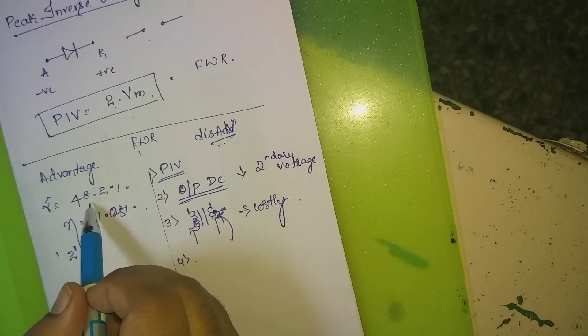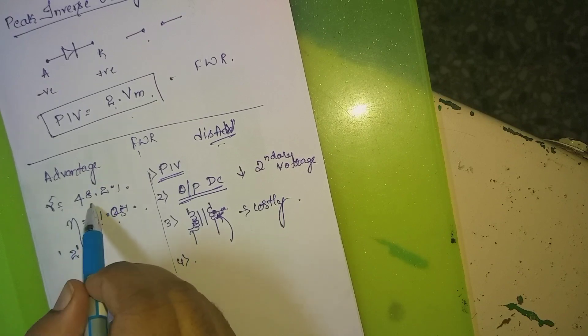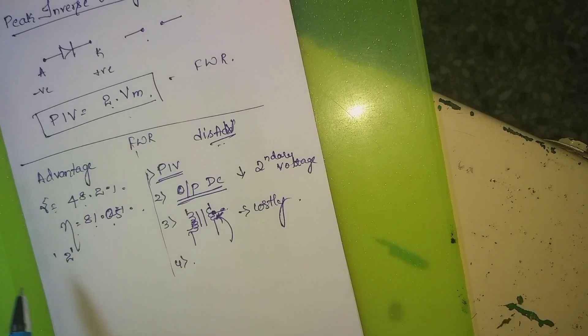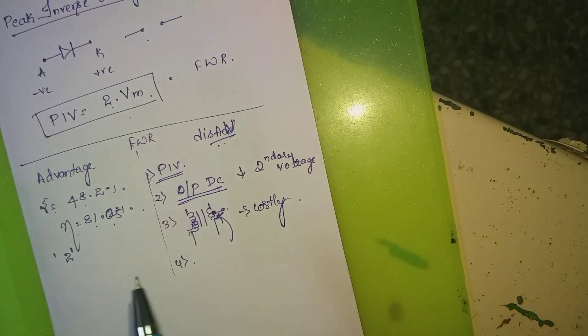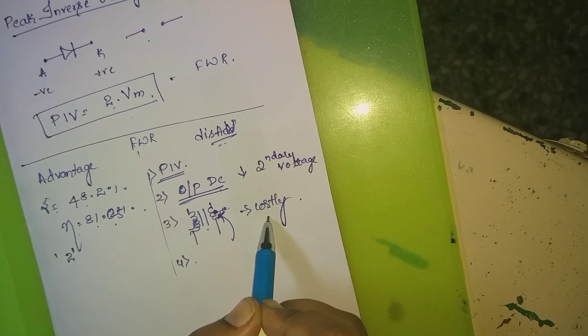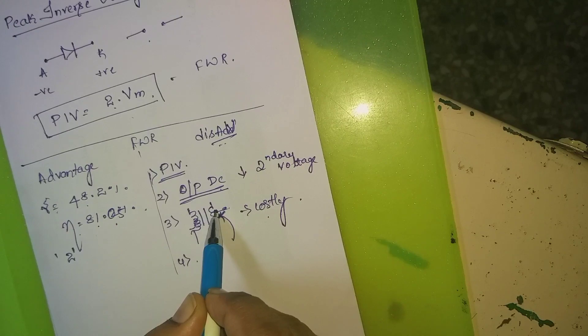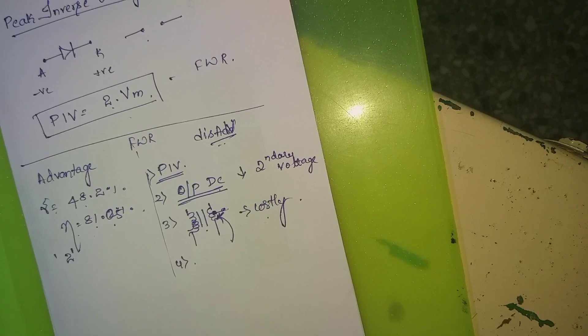To summarize: the advantages are 81% efficiency, 48% ripple factor, and it requires only two diodes. The disadvantages are high PIV, output DC voltage less than secondary voltage, the center-tap transformer is costly, and locating the center tap point is difficult. These are the main advantages and disadvantages of the full wave rectifier.